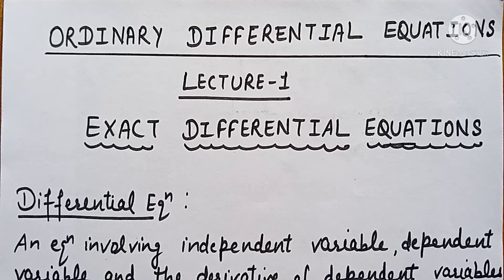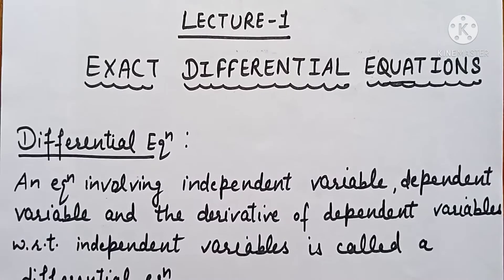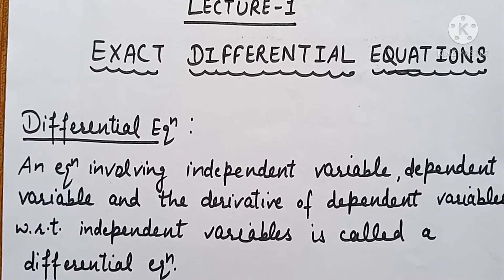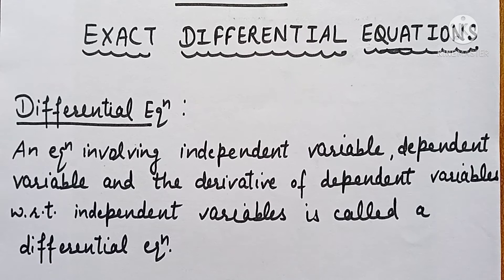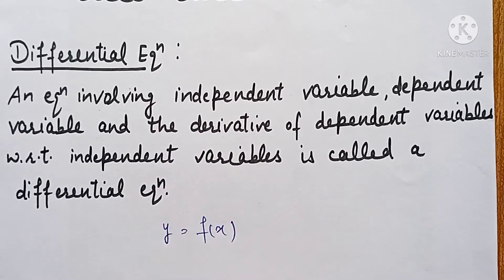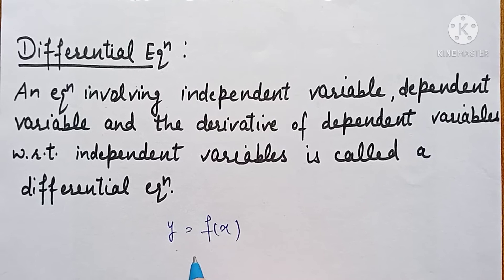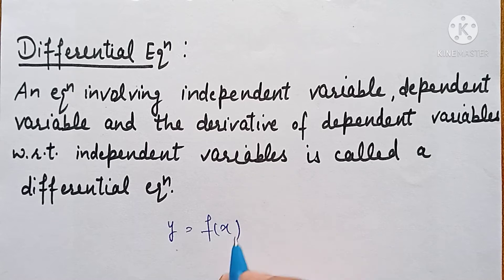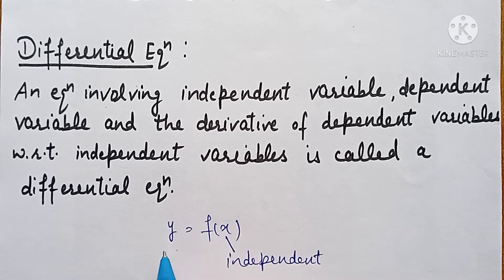Differential equation is an equation involving independent variable, dependent variable, and the derivative of dependent variable with respect to independent variable. That is called a differential equation. That means if we have any equation y = f(x), then any equation which contains y, x, and the derivative of y with respect to x — here x is the independent variable and y is the dependent variable.